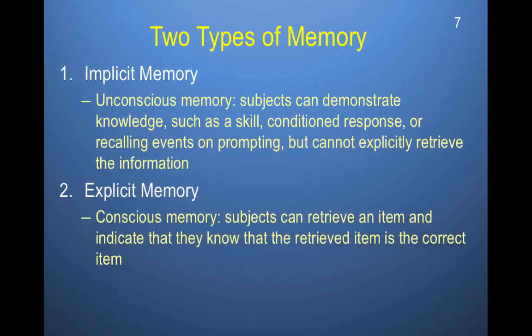Explicit memory, on the other hand, is conscious memory. Subjects can retrieve an item and indicate that they know the retrieved item is the correct item. They have source memory — they remember when something occurred, and details about the time, place, and so on.